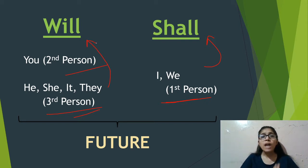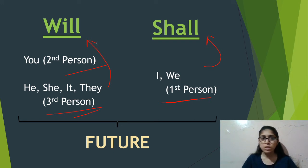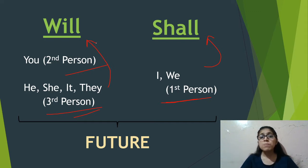But you will see that I and we will also use will, and the second and third person will also use shall. So today we are going to learn that when shall and will are used in their standard way, and when they are reversed, what difference in meaning does that create.